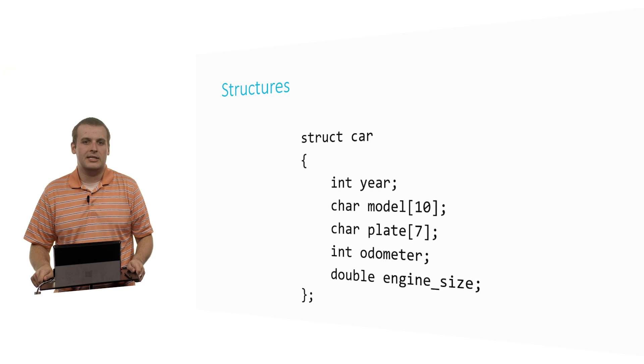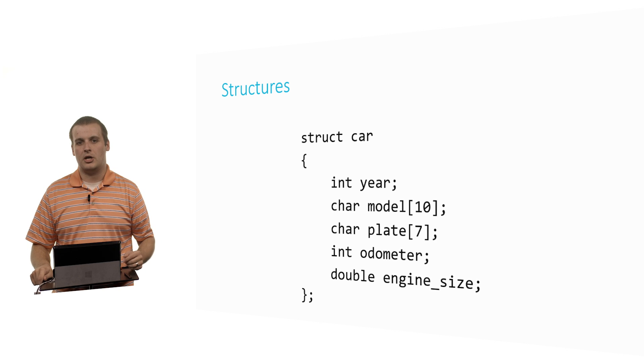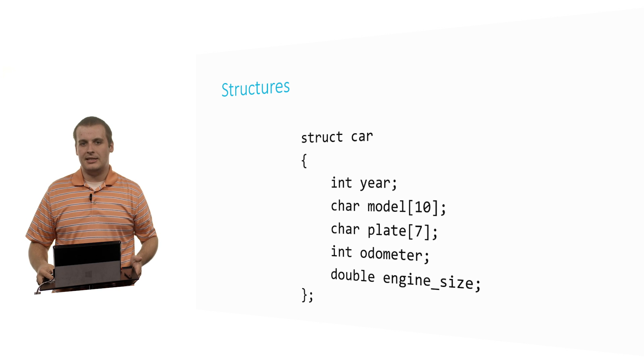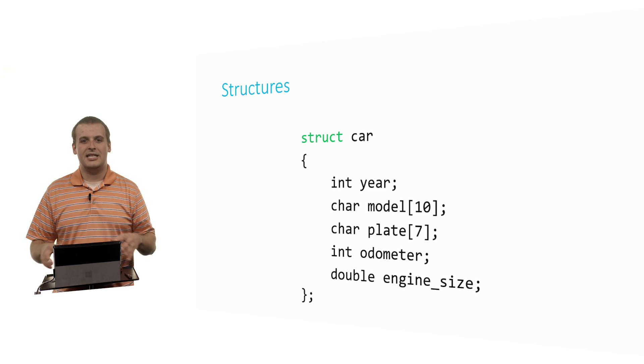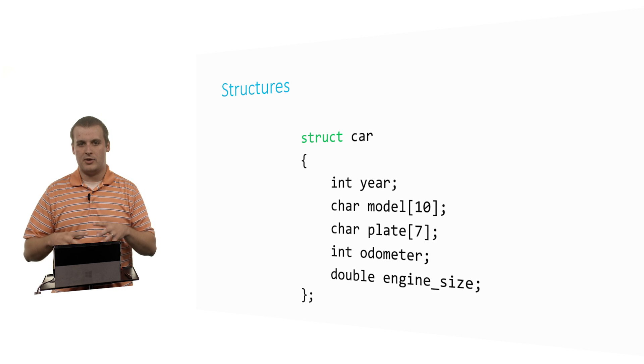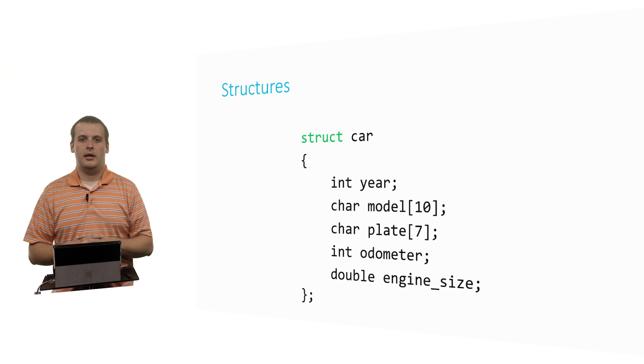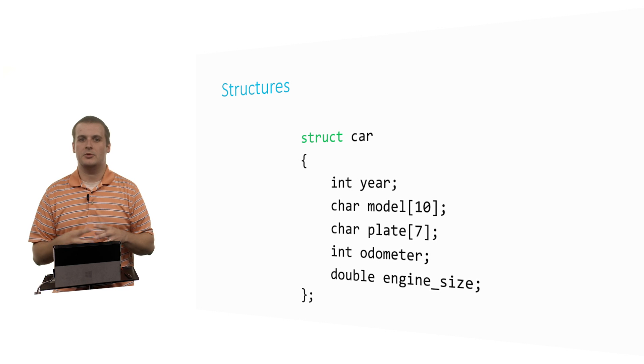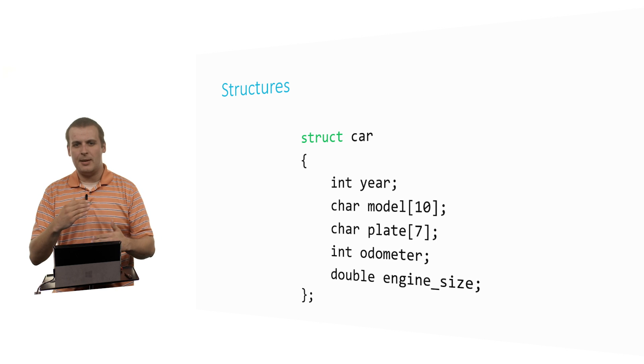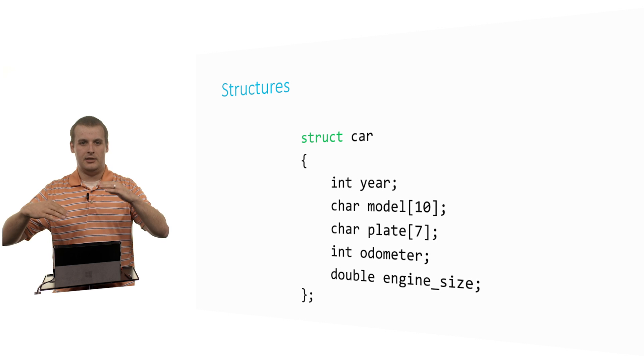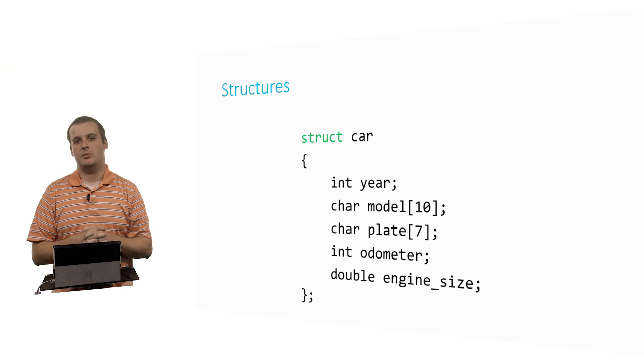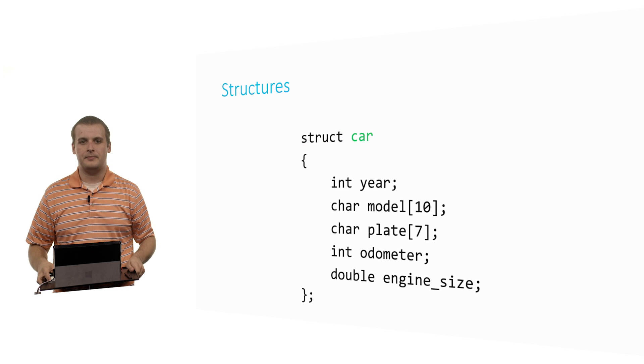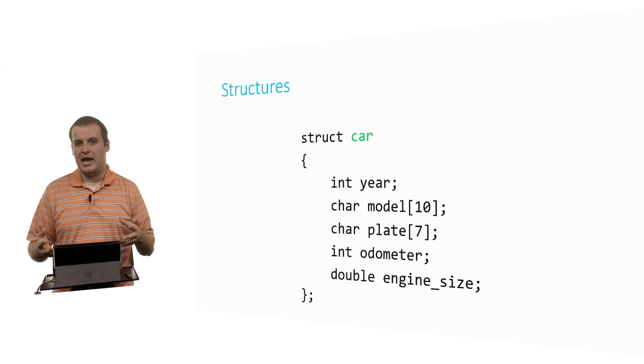Here's an example of a very simple structure. This is what the syntax would look like to create a structure for a car. Let's go through the syntax here. Struct, that's the keyword that indicates that I'm creating a new data type here. In particular, the data type's name is going to be struct car, as we'll see. This is the tip off to the compiler that this is a group of variables that is going to be considered part of the same type.